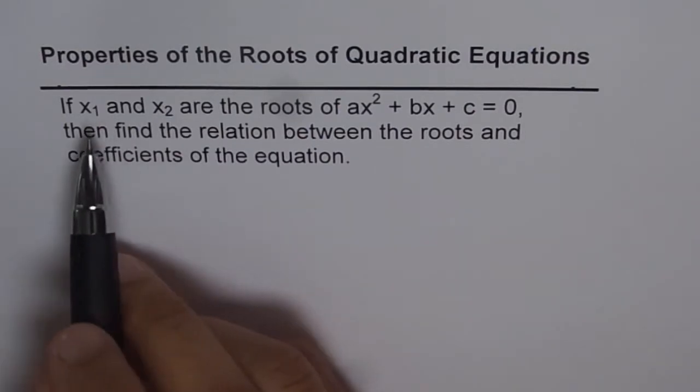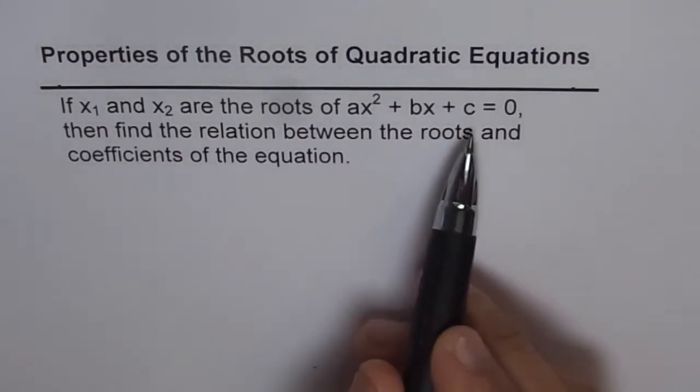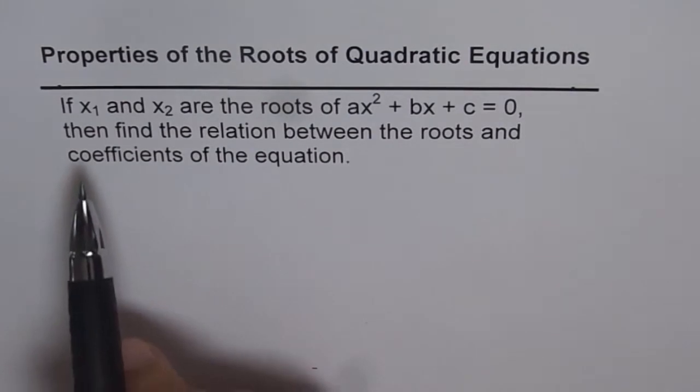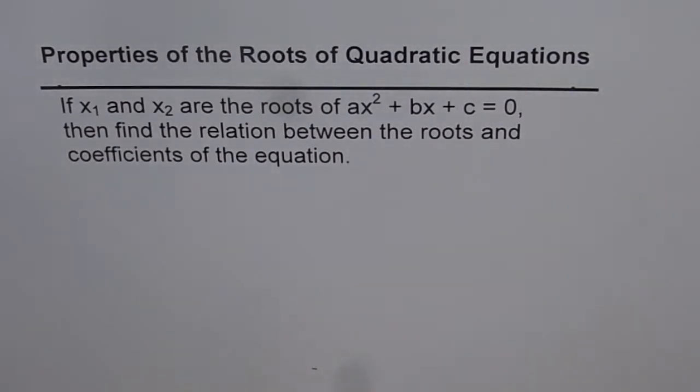Well, we are given x1 and x2 as roots of the equation. That means x minus x1 and x minus x2 are factors of the equation. And if we multiply them, we should get the equation itself.